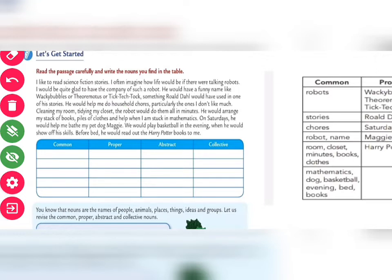"I like to read science fiction stories." So first of all, the word 'story' becomes a common noun — you will write 'story' here. "I often imagine how life would be if there were talking robots." 'Robots' will come under common noun. "I would be quite glad to have the company of such a robot." 'Company' is also a common noun.